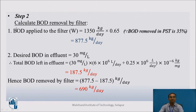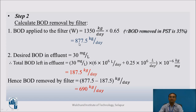Step 2: Calculate the BOD removal by the filter. First, calculate the BOD applied to the filter. Since 35% of BOD is removed by the primary clarifier, the remaining 65% enters the trickling filter. BOD applied to filter = 1,350 kg/day × 0.65 = 877.5 kg per day.